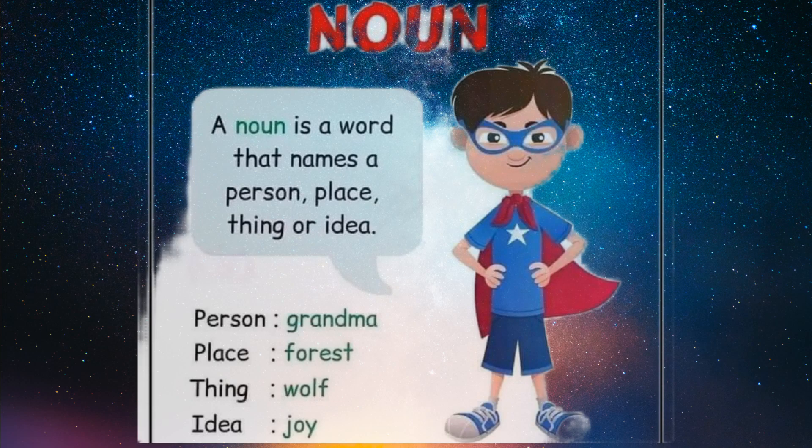Noun وہ لفظ ہوتا ہے جو کسی شخص، جگہ، چیز یا idea یعنی سوچ کو ظاہر کرے تو اس کو noun کہتے ہیں۔ For example, person میں آتے ہیں: mother, sister, father, boy, man, woman. Place میں آتے ہیں: city, village, Peshawar, country name.